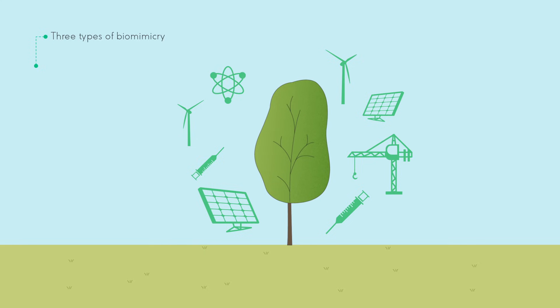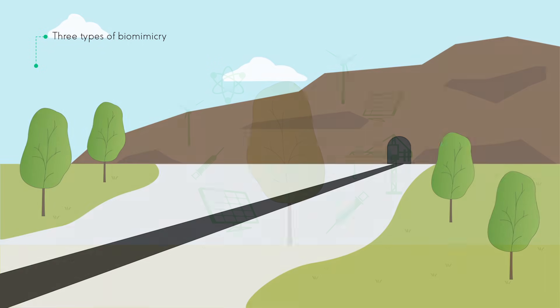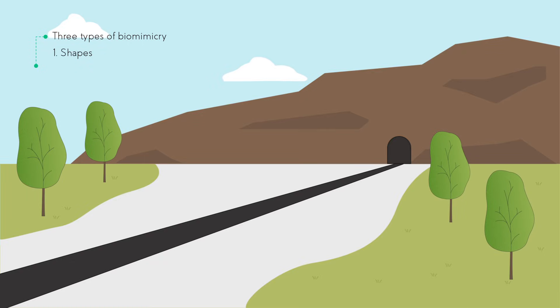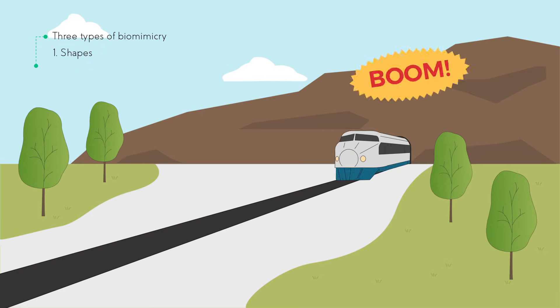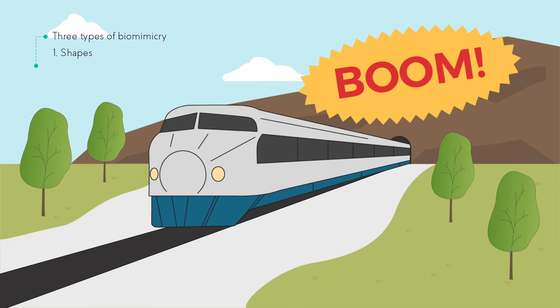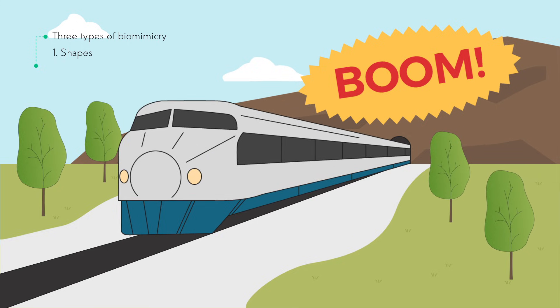There are three types of biomimicry. The imitation of shapes. During the early 90s, the Japanese high-speed bullet train created a sonic boom when exiting a tunnel because of the air pressure.